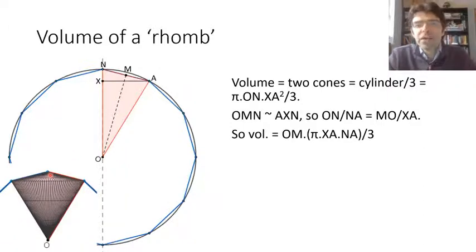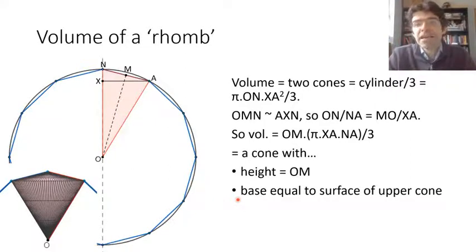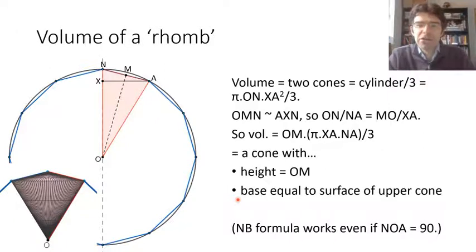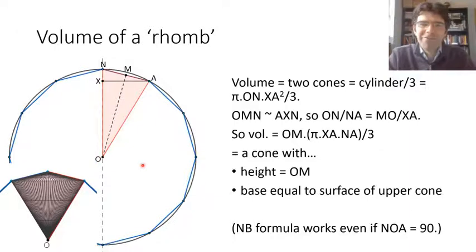So we can say that the volume of the rhomb equals that of a cone whose height is OM and whose base equals the upper outer surface of the rhomb. And in fact this formula would still hold even if angle NOA had been 90 degrees and we were dealing with a single cone rather than a rhomb — nothing in the workings would change. So cone 1 is equal in volume to cone 2, where the height of cone 2 is the distance in cone 1 from the centre of the base to its sides, and the base of cone 2 is the surface area of cone 1.